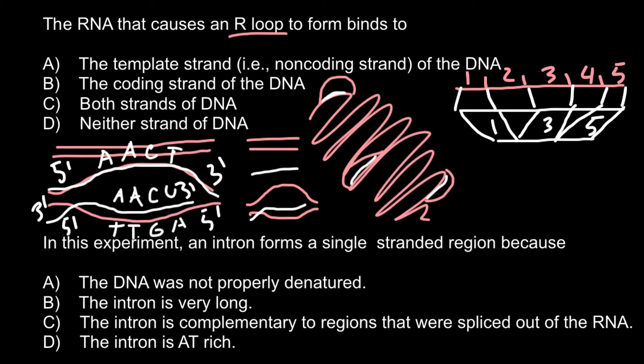Mature messenger RNA would consist only of fragments 1, 3, and 5. Later, other scientists also found that different variants are possible — the same gene can produce different variants of messenger RNA due to different splicing of introns. For example, exon number 1 can be present, an intron can be retained, exon 3 can also be present, intron number 4 can be spliced off, and exon number 5 can also be present.